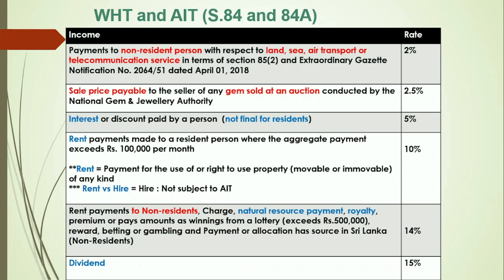The next item is rent payments to non-residents. If you are making rent payments to residents, the previous explanation is applicable. But if you are making rent payments to non-residents, the applicable tax rate is 14%. Other than rent, charges, natural resource payments, royalty, premium, or payments for winnings from a lottery, betting, or gambling are also subject to tax at 14%. Definitions for natural resource payments and royalties can be found in Section 195 of the Inland Revenue Act. If your lottery winning payment does not exceed Rs. 500,000, it is an exempted amount and no withholding tax needs to be deducted. If the lottery winning prize exceeds Rs. 500,000, you have to deduct 14% withholding tax on such payments.